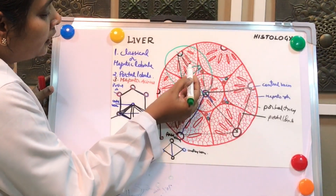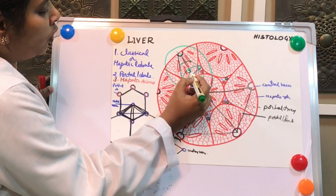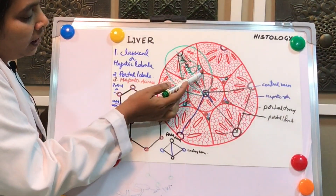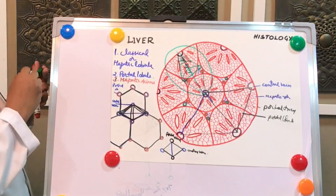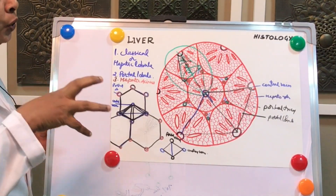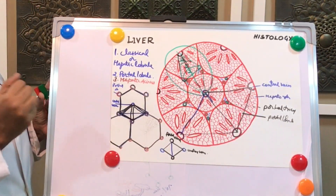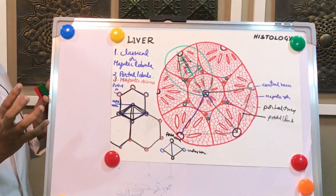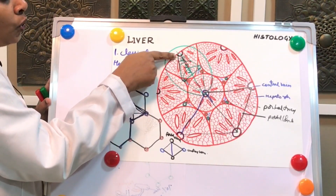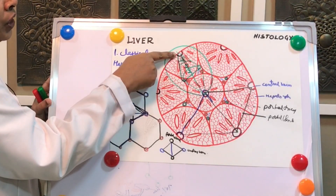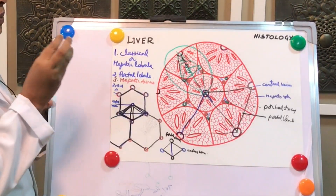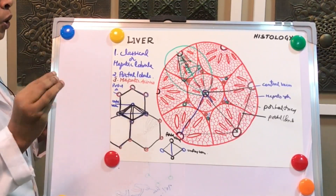Zone 1 is the area nearest to the portal triad — arteriole, venule, and ductule — so it has rich blood supply with oxygen and nutrients. Zone 1 is the safest zone. Zone 2 is intermediate, with minimal blood supply and oxygenation compared to zone 1. Zone 3 is close to the central vein and is poorly supplied with nutrients and oxygen; it also has poor toxin clearance.